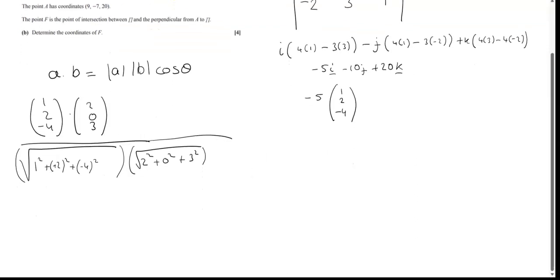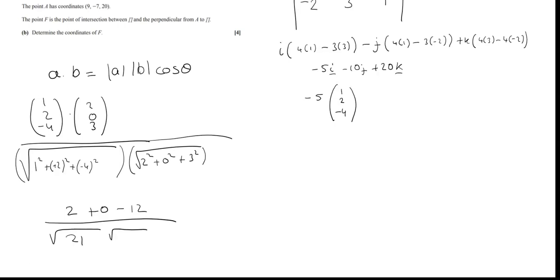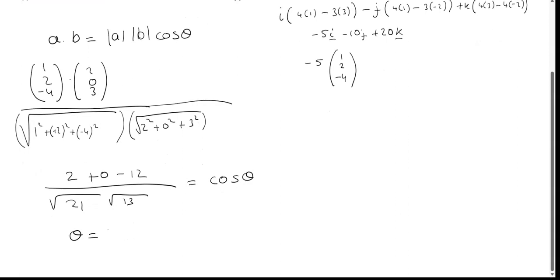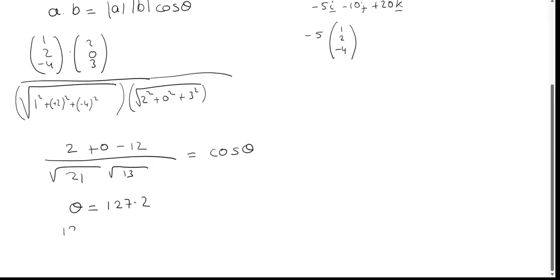The dot product gives 2 + 0 − 12 = −10. The magnitude of a: 1 + 4 + 16 = 21, so √21. The magnitude of b: 4 + 9 = 13, so √13. Taking cos inverse of that gives θ ≈ 127.02°. But we need to do 180° minus this, because that's the angle between the two normal vectors, and we want the angle between the planes. The question also asked for the acute angle, so you need a value below 90°. That's part a.